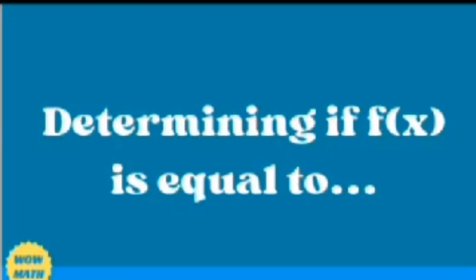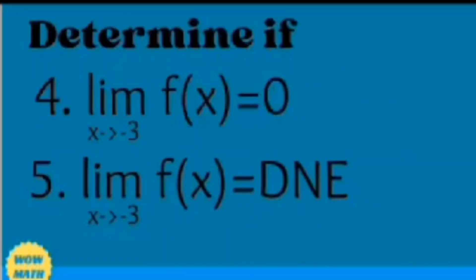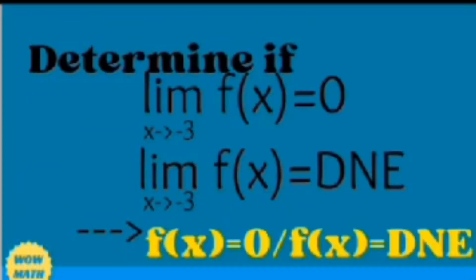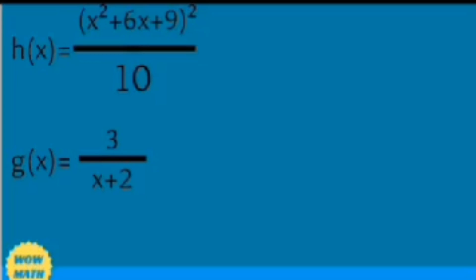Good day everyone. I am Mr. Spallardo, and this presentation aims to find how to obtain the following: the limit of f of x equals 0 as x approaches negative 3, and the limit of f of x does not exist as x approaches negative 3. Our given values are: h of x equals x squared plus 6x plus 9 squared over 10, and g of x equals 3 over x plus 2.